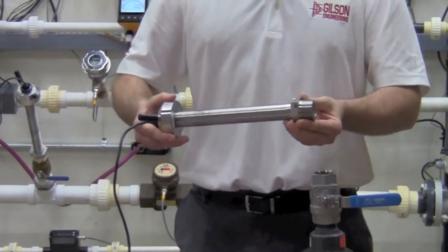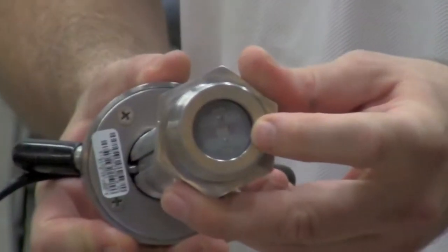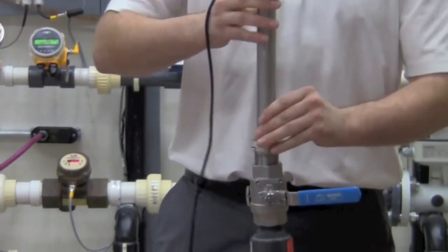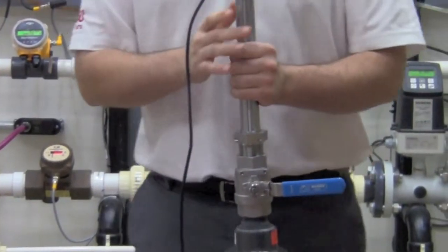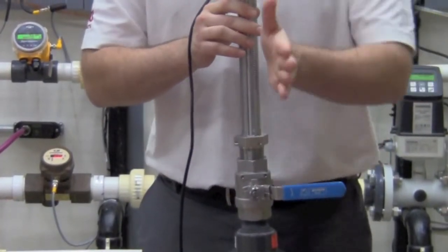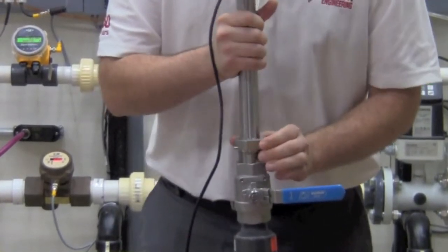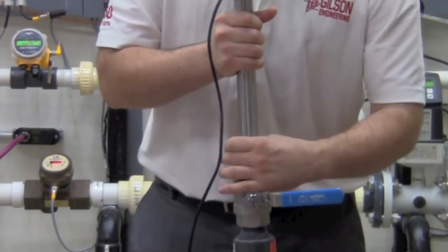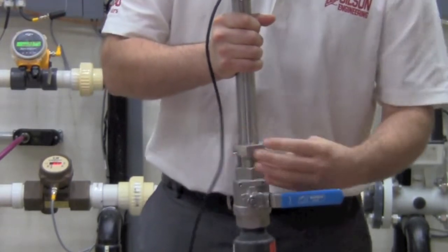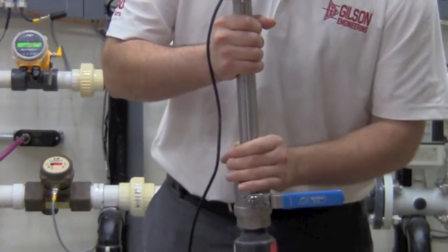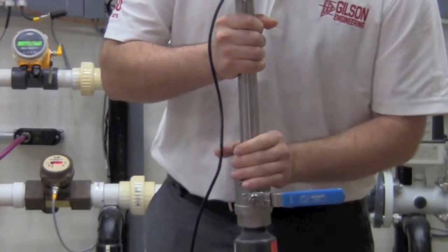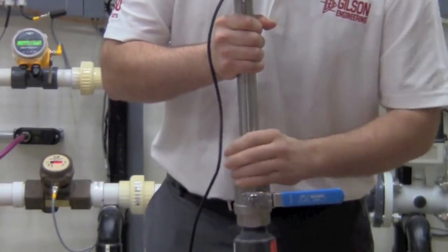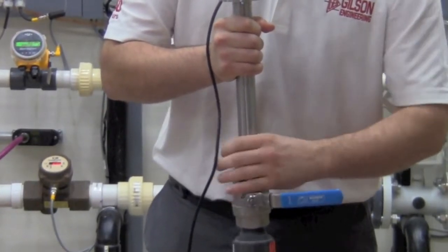Once you have the electrodes completely retracted, you're going to begin inserting into the valve. I'm going to put it in line with flow here to show you that when you hold this still, your mounting nut has the ability to spin independently of the main body.